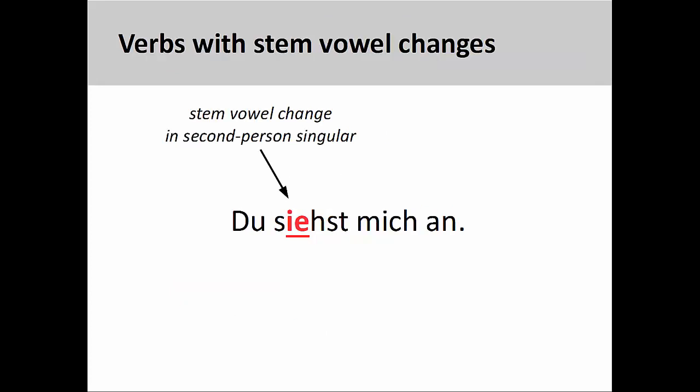Now that we've talked about the consonant endings of verb stems, let's talk about stem-vowel changes. Verbs that have a stem-vowel change in the present tense also have the same change in the informal imperative. For example, the stem-vowel for the verb sehen, meaning 'to see,' changes from e to ie in the second person singular.